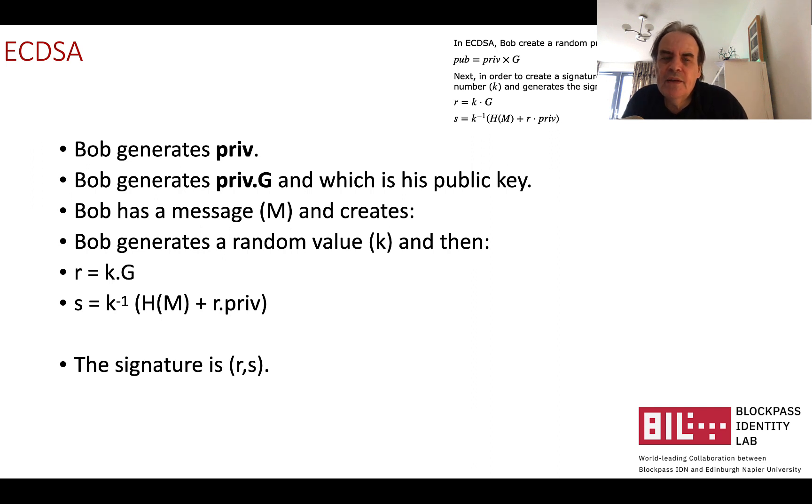Okay, so the way that it works, we'll take Bob as an example here. Bob creates his private key, a 256 bit private key. Bob then generates his public key by adding G private by the number of the value of the private key to get private times G. That becomes his public key. He then takes a message and will generate a nonce value or a random value known as k in this case.